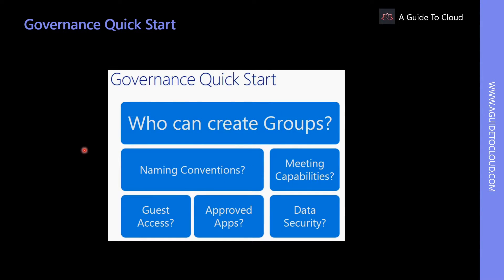To quickly implement governance in Teams, organizations should focus on these areas: who can create groups within your organization; what sort of naming convention you want to set as a template; what meeting capabilities you would like to provide for your users; whether you want to include any third-party apps to be approved, or enable guest access or external user access within your Teams collaboration platform.